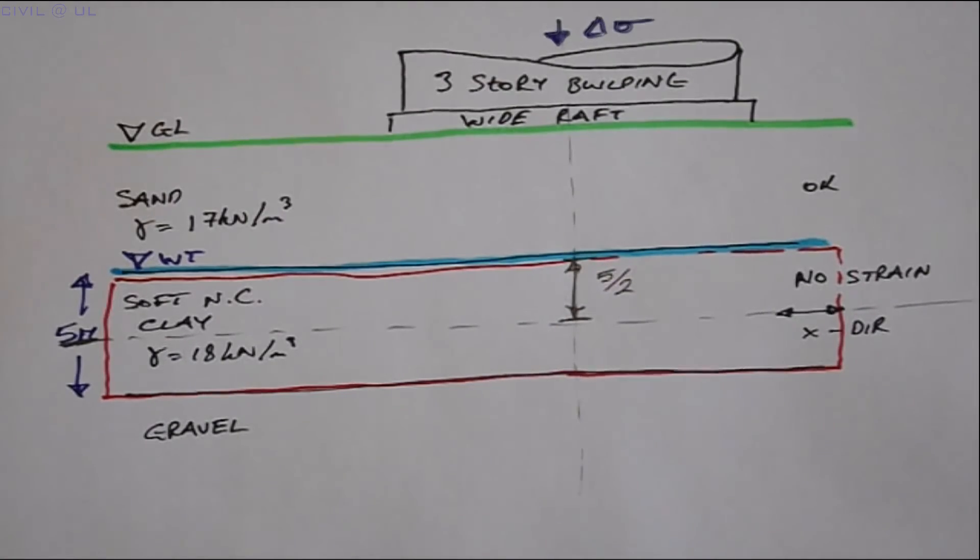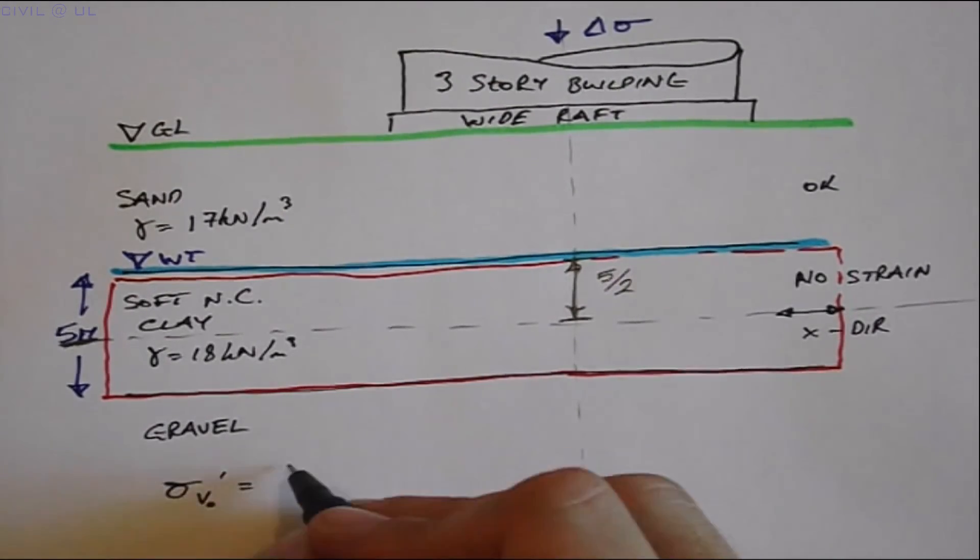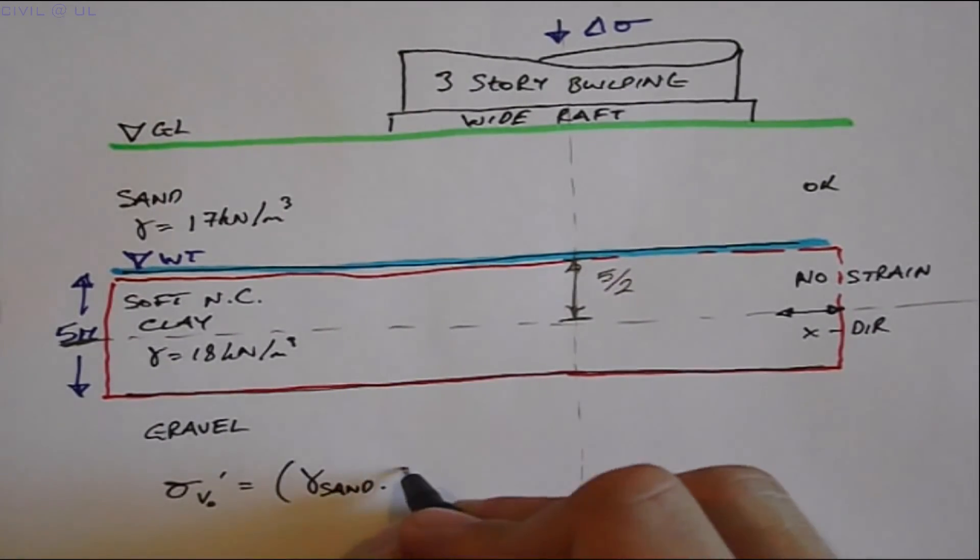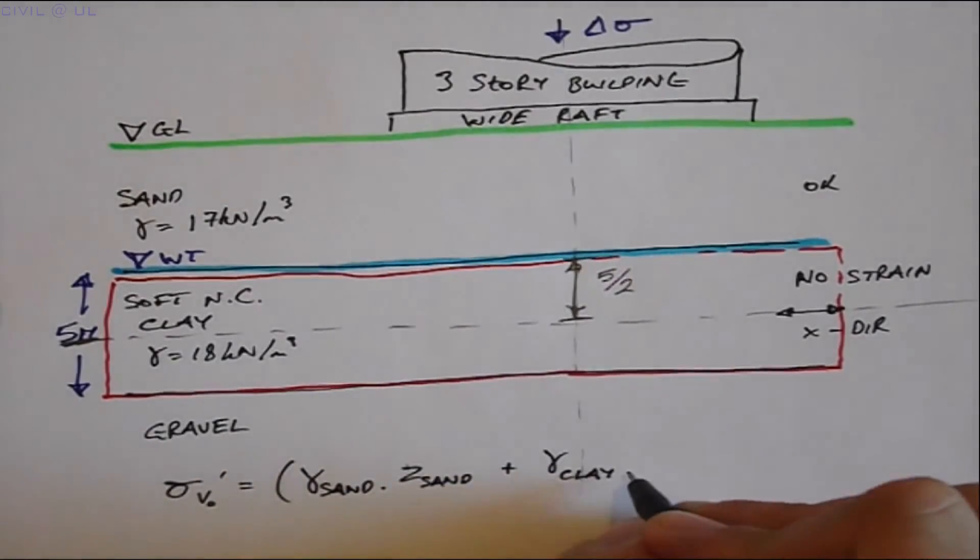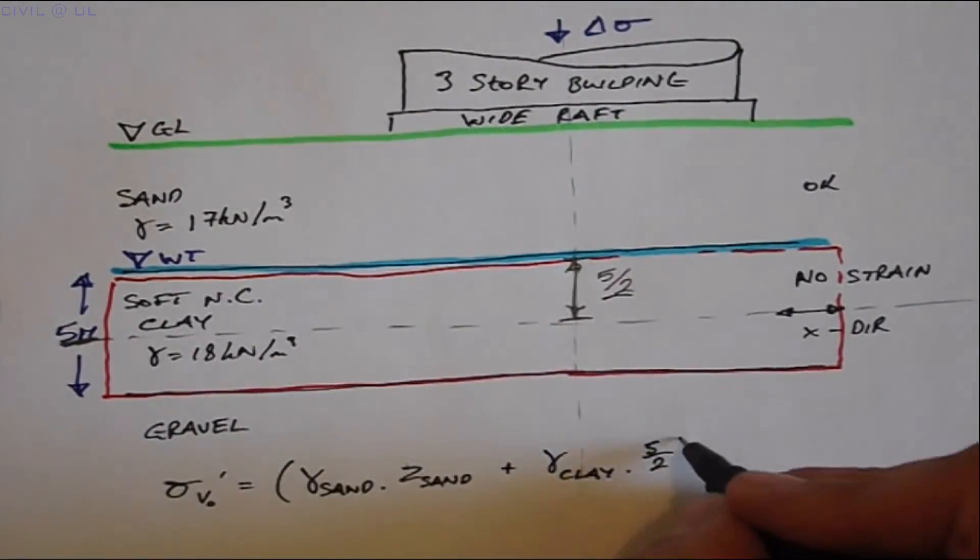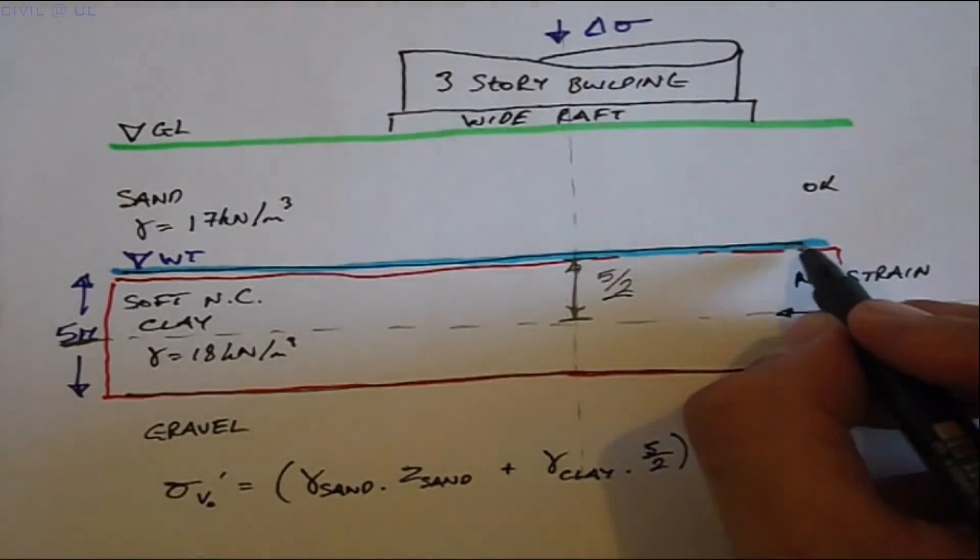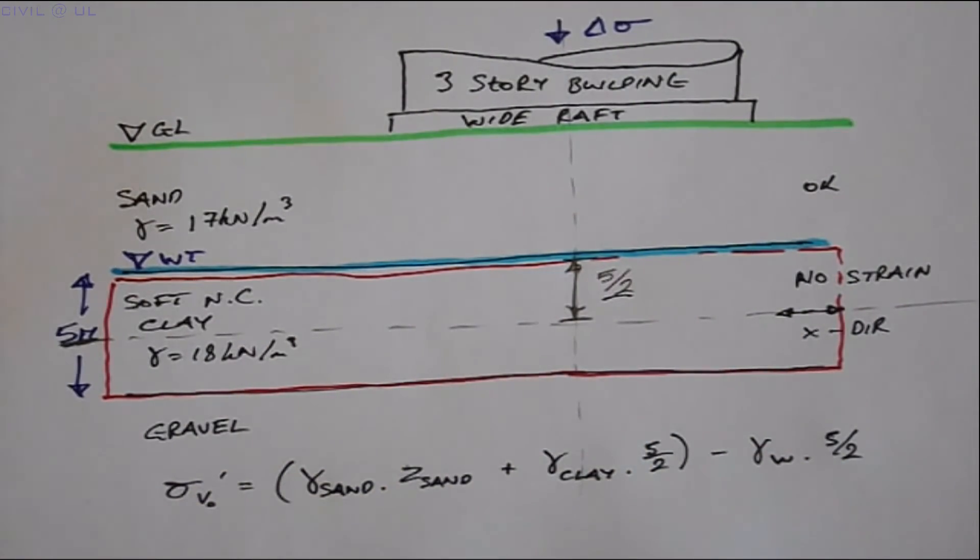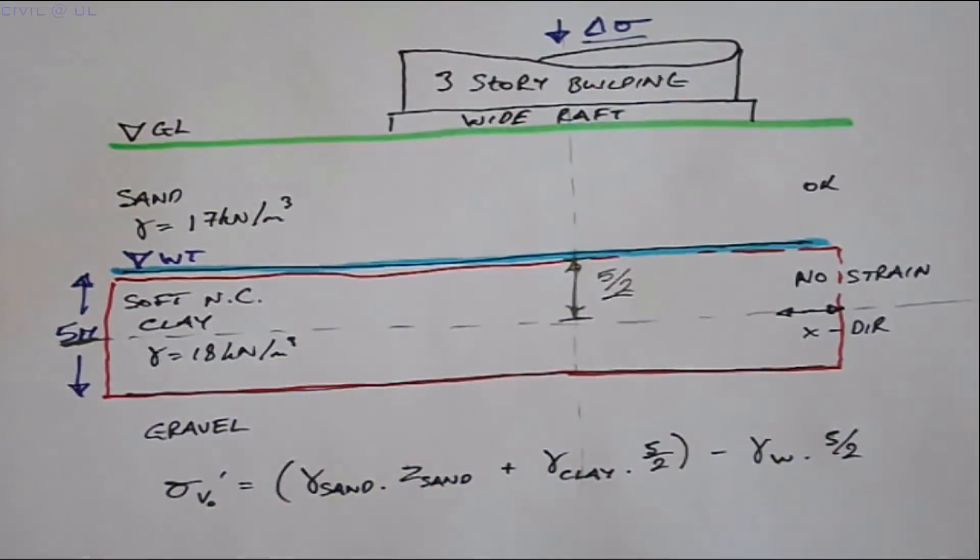The vertical effective stress at the center of the clay layer is therefore equal to the unit weight of the sand times the depth of the sand, plus the unit weight of the clay times half the thickness of the clay layer, minus the unit weight of water times half the thickness of the clay layer. The increase in stress at the center of the clay due to the construction is equal to delta stress.